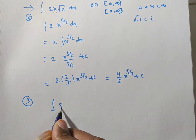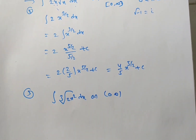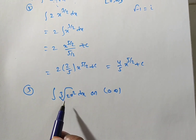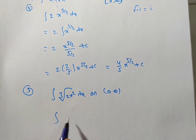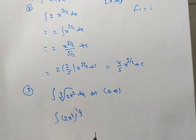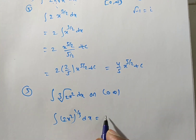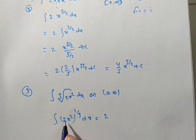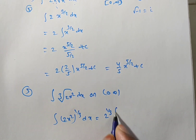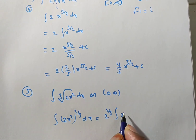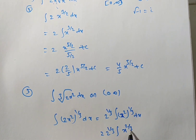Third exercise problem: find integral of cube root of 2x squared dx on the open interval (0, infinity). The given function is not in standard form x to the power of n, so we convert. This is integral of (2x squared) to the power of 1 over 3 dx. Using (ab)^n = a^n times b^n, we get 2 to the power of 1 over 3 times integral of x squared to the power of 1 over 3 dx, which is 2 to the power of 1 over 3 times integral x power 2 over 3 dx.